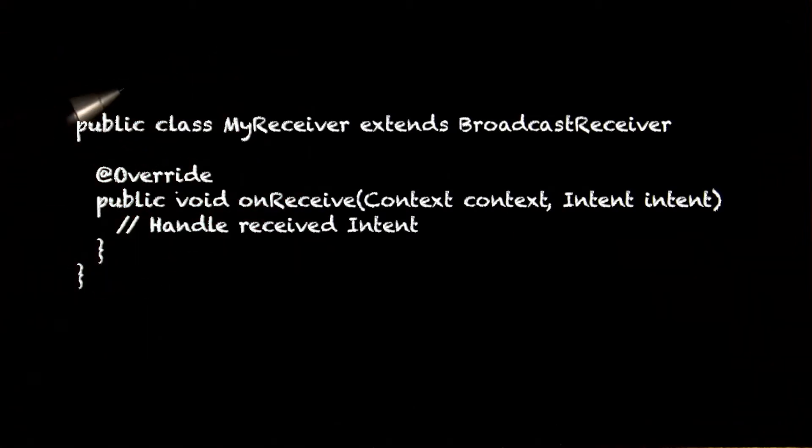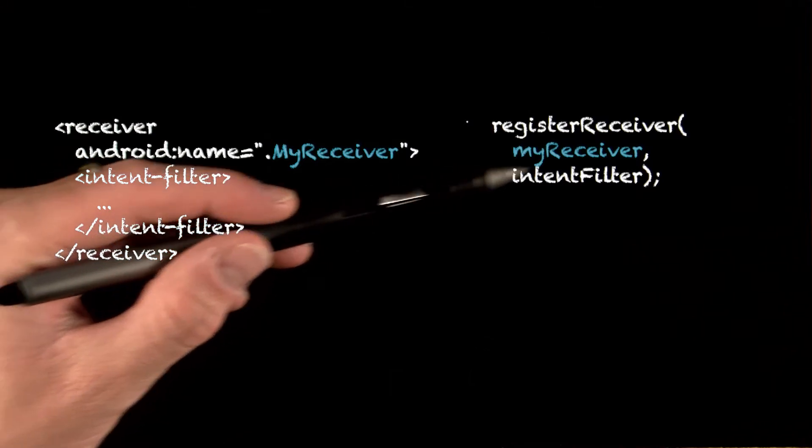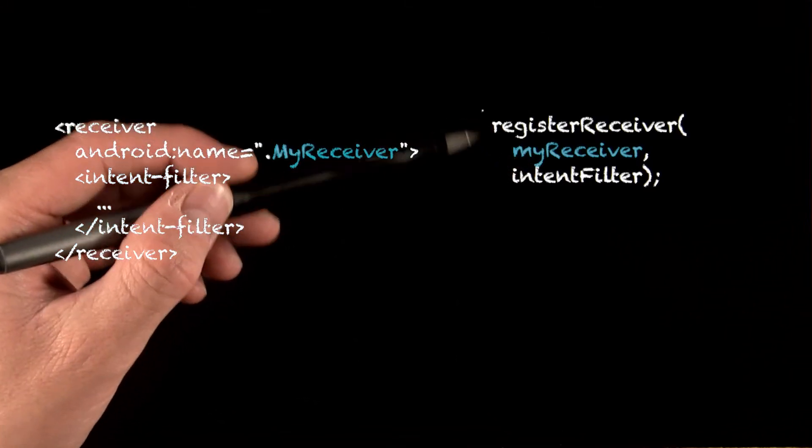To have your receiver start listening for broadcasts, you need to register it, either through an entry in your manifest like this, or dynamically within another application component, usually an activity, like this.